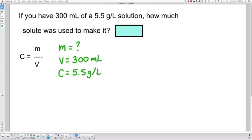Okay, so right away I see a problem. My volume is in milliliters. My concentration is in grams per liter. So I need to convert my volume into liters. So 300 divided by 1,000 because I know that there are 1,000 milliliters in one liter. That gives me 0.300 liters.